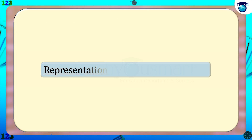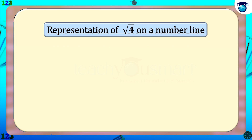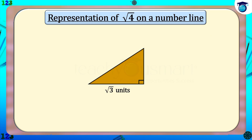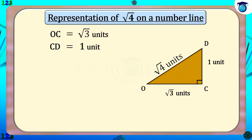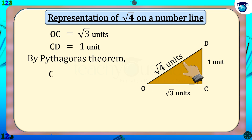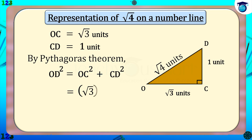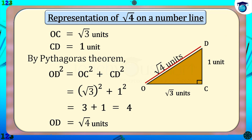Similarly, let us represent root 4 on a number line. For that, take root 3 units as the base and 1 unit as the altitude of a right triangle so that the hypotenuse equals root 4 units. In right triangle OCD, take OC equals root 3 units and CD equals 1 unit. By Pythagoras theorem, OD² = OC² + CD² = (√3)² + 1² = 3 + 1 = 4, therefore OD equals root 4 units, which is 2 units.